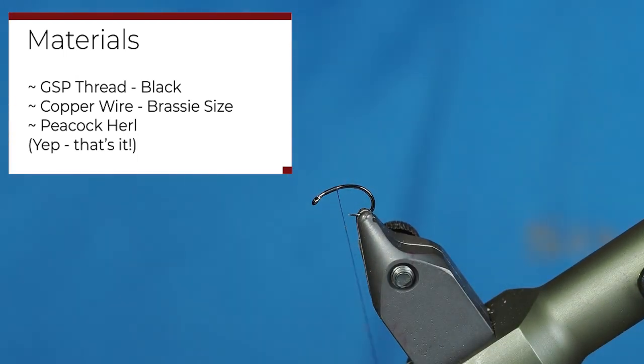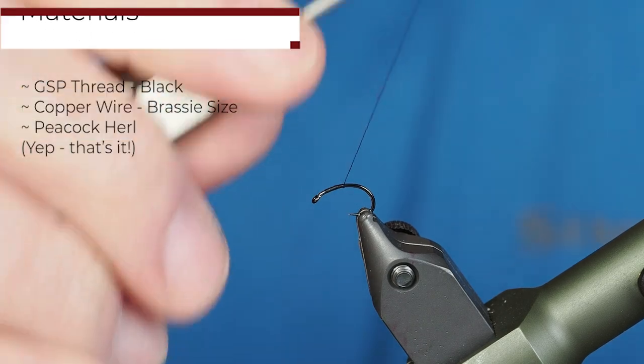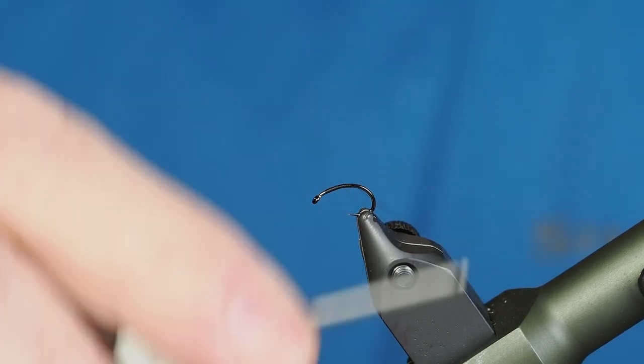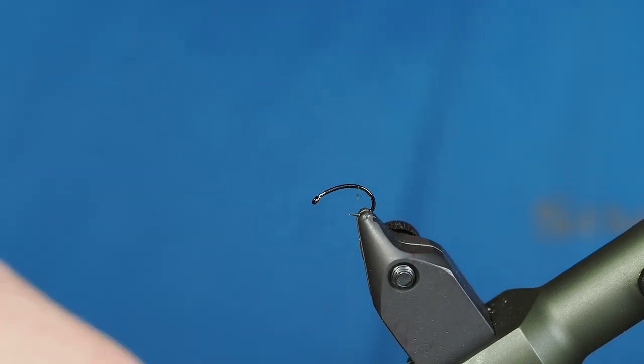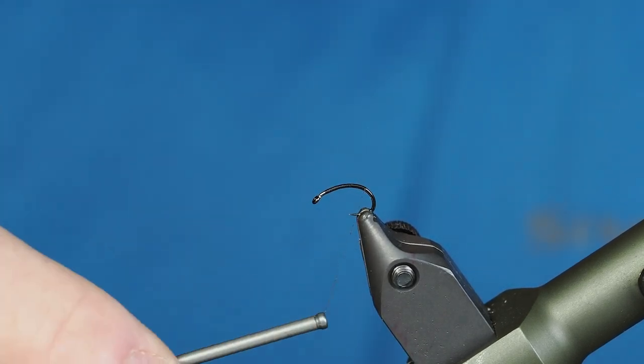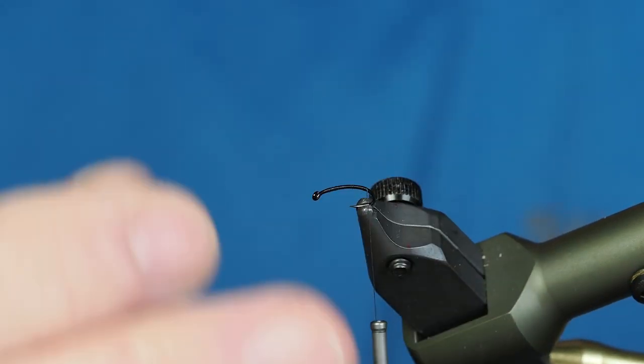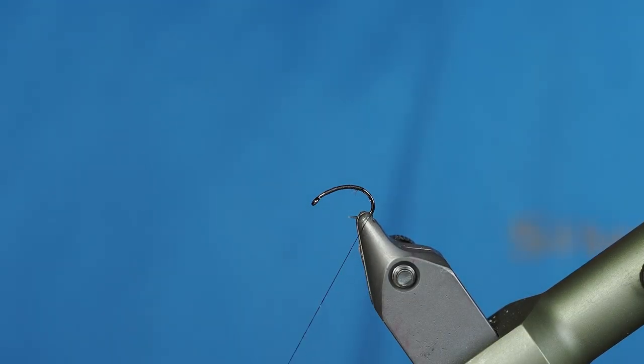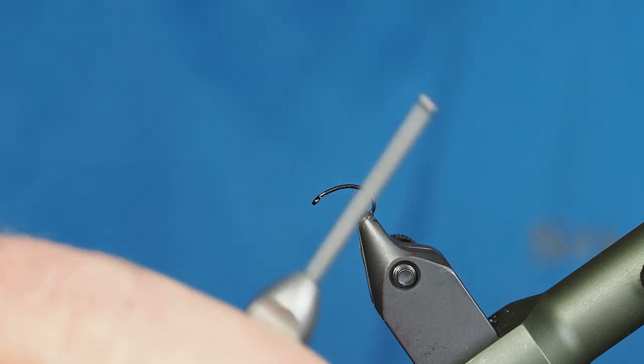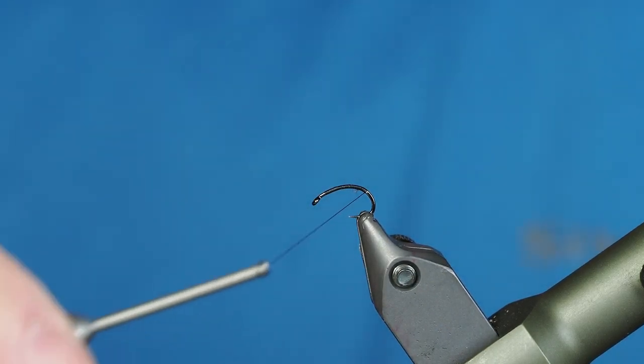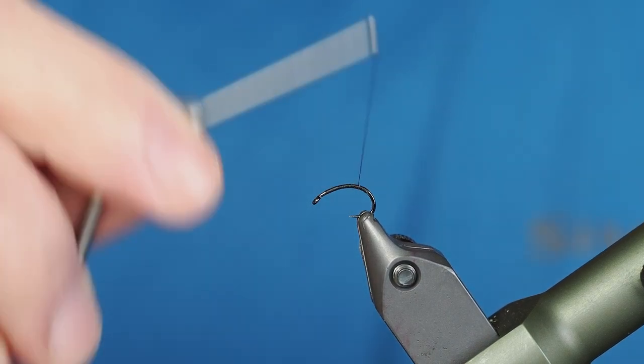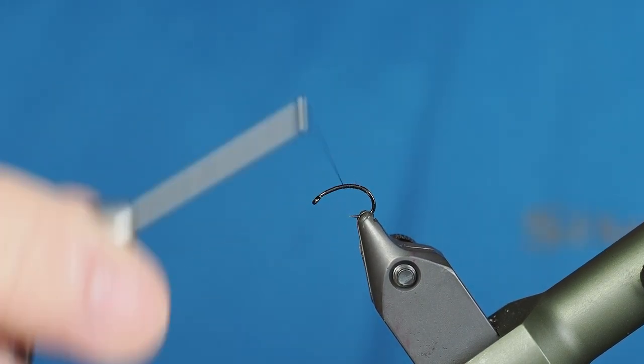I've got a size 16 scud hook here in my vise and some Veevus GSP gel spun on the hook. You can see I've got this hook down in a downward trajectory. That's because we're going to be tying some of the material, the first material, right deep down around the bend of the hook. And our first material is just going to be brassy size copper wire.